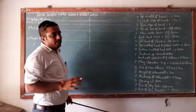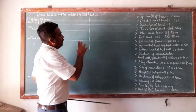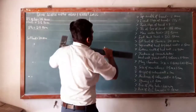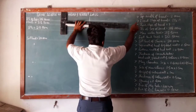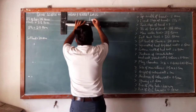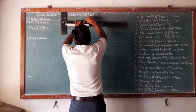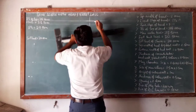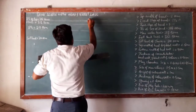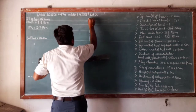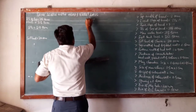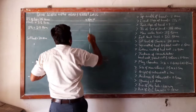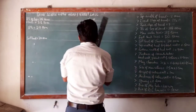Let us now demarcate the details of the bund first. The top width of the bund is given as 2 meters. On either side, 1 meter each — so this is 2 meters. Now we shall draw the upstream side slope.